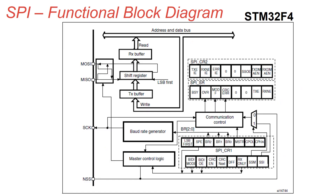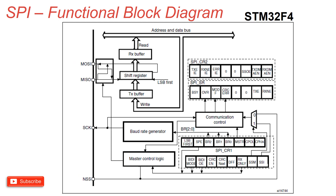Now let's try to understand the SPI functional block diagram for our reference microcontroller from the STM32 F4 family. As you can see, four pins are coming out: MOSI, MISO, CLOCK, and NSS. NSS is the slave select line. Unlike I2C, SPI works in full duplex mode, so there is a separate RX and TX buffer with an associated shift register. Apart from this, there are two control registers to configure SPI communication and a status register to get the status for various events.